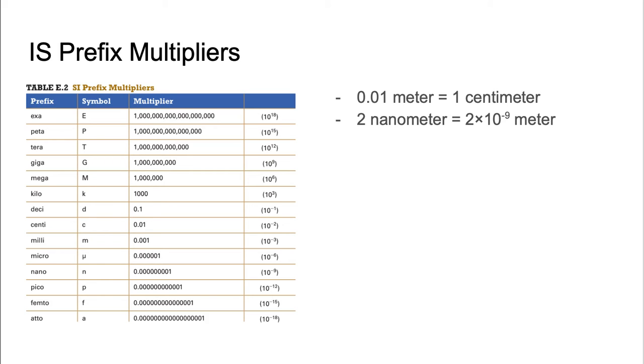So ones that we should memorize are kilo, deci, centi, milli, micro, and nano.